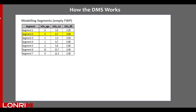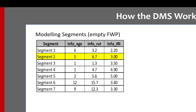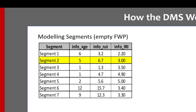Let's say for example that you have in your database a Ford Works program consisting of several segments. In this example we are showing only seven segments, but of course in reality that could be several hundred, several thousands, or even tens of thousands of segments defined on your network. In this example we have existing information related to the age, rut depth, and international roughness index or IRI.